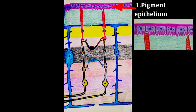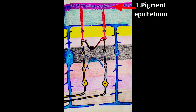There are two functions for this epithelium. Number one, absorption of the light. Number two, phagocytosis of the tip of rods and cone cells.